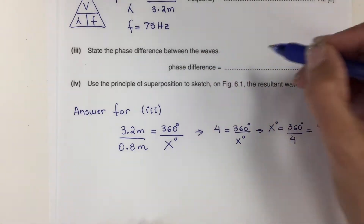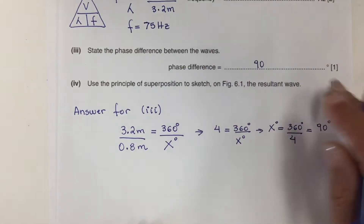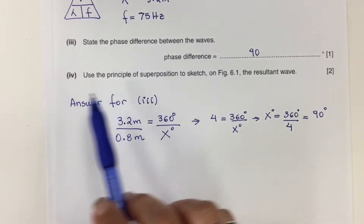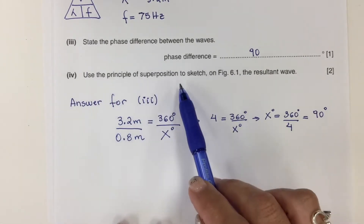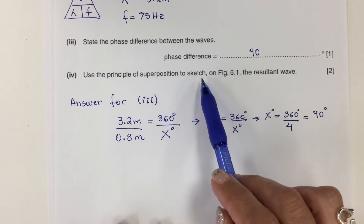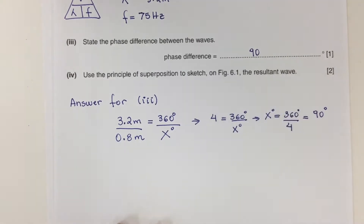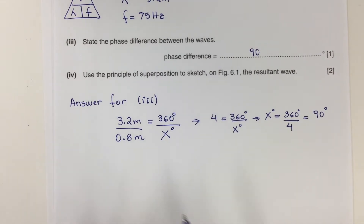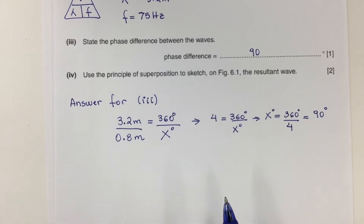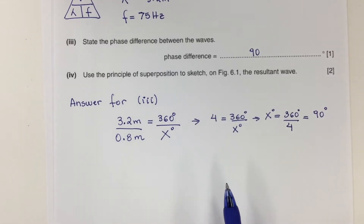The last part of this problem: use the principle of superposition to sketch on figure 6.1 the resultant wave. The principle of superposition occurs when two or more waves meet at a point, and the resultant wave is the sum of the vertical displacement of the individual waves.